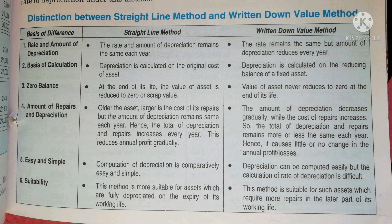At the end of its life, under the Straight Line Method, the value of assets is reduced to zero or scrap value. For example, if an asset has a life of five years, its value reduces to zero or scrap value because we charge a fixed amount of depreciation every year. In this way, the asset's value reaches zero at the end of its life.